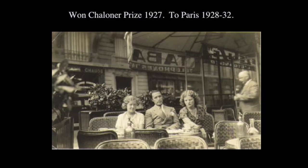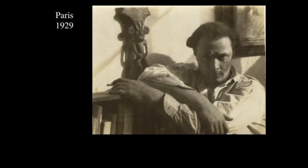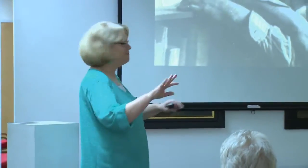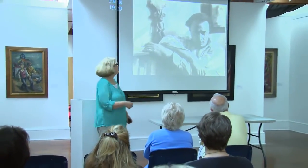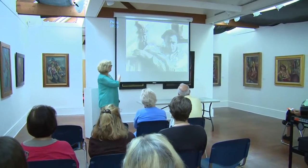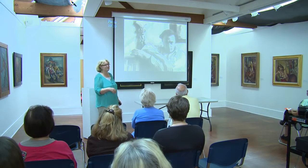Michael Lenson had won the Chaloner Prize, which allowed him to study abroad for several years — three to four years. This is Michael Lenson between two beautiful women in Paris. And I love the fact that there's an African carving on the wall, because maybe a decade and a half earlier, Picasso had also been looking at African art in Paris. It's a wonderful picture of an artist posing on the bookshelf with the African art behind him.